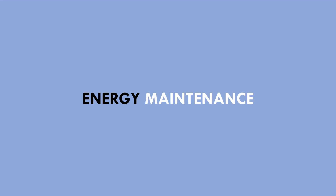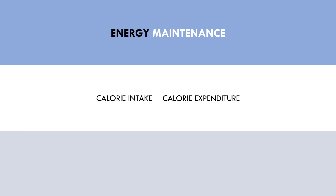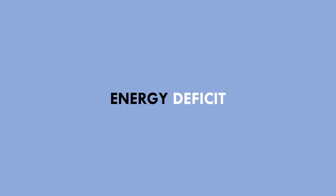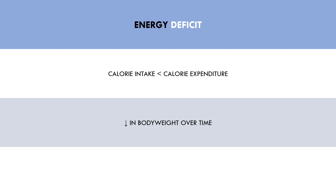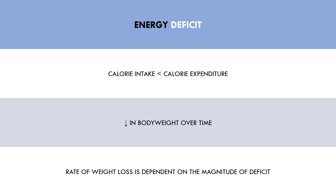The second state of energy balance is energy maintenance — this is when our calorie intake is equal to our energy expenditure, resulting in approximate maintenance of body weight over time. The last form of energy balance is an energy deficit — this is when our calorie intake is less than our expenditure. This will result in body weight loss over time, and the magnitude of the deficit will determine the rate of weight loss.